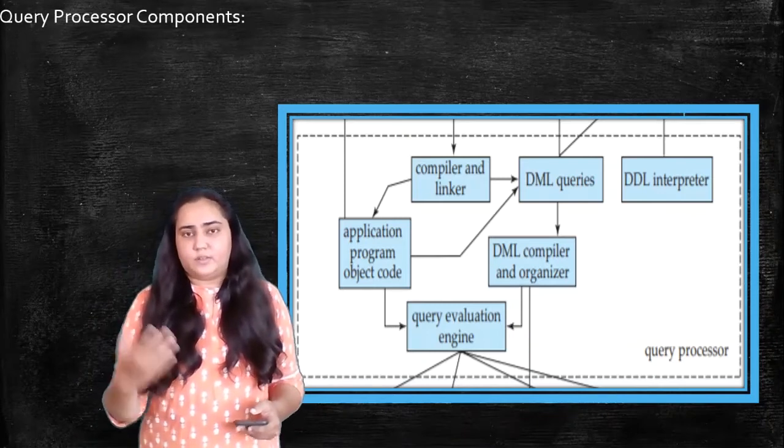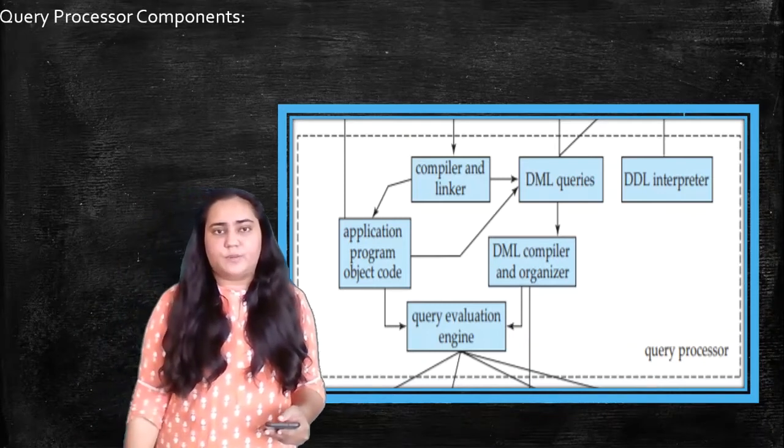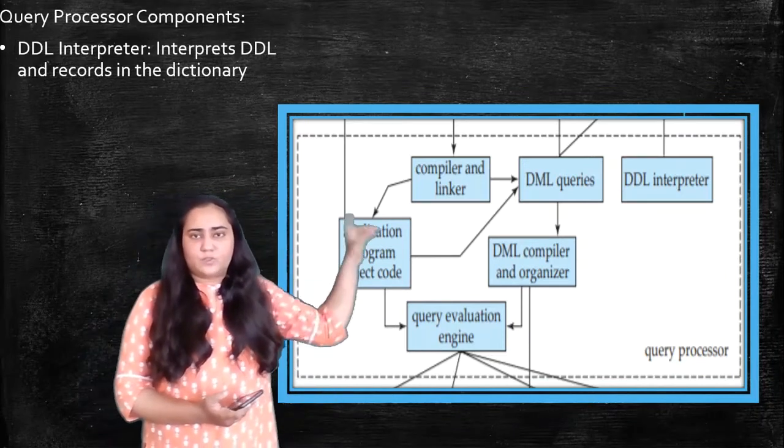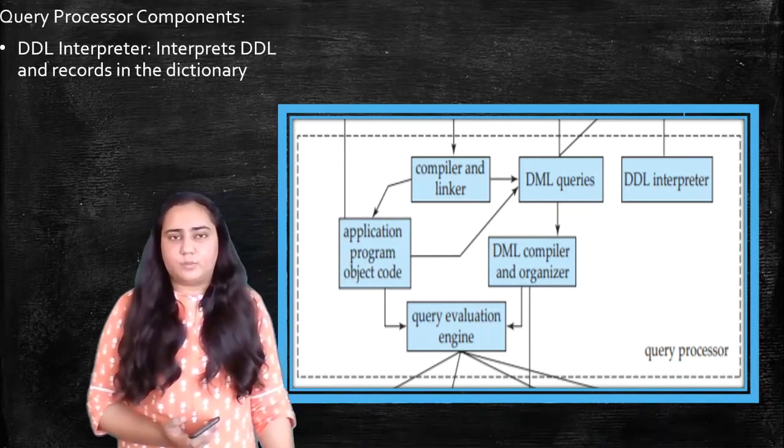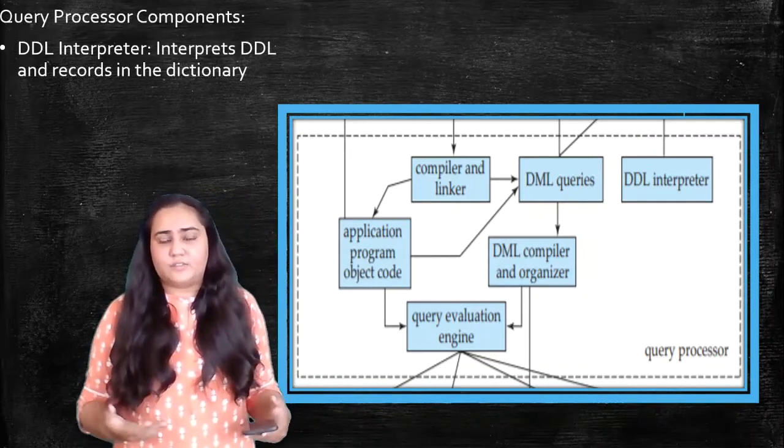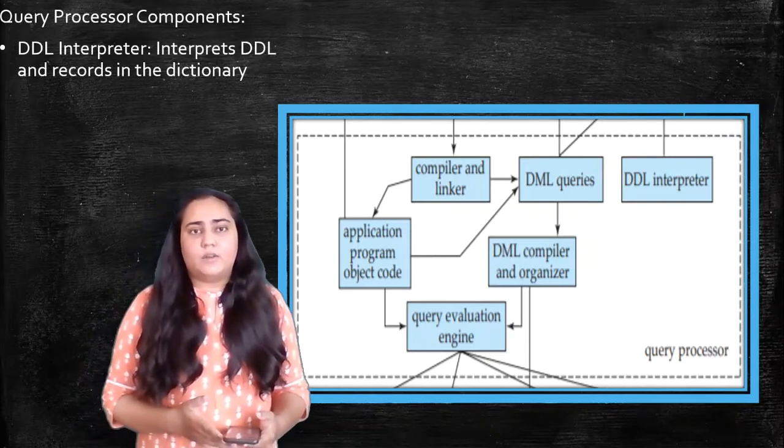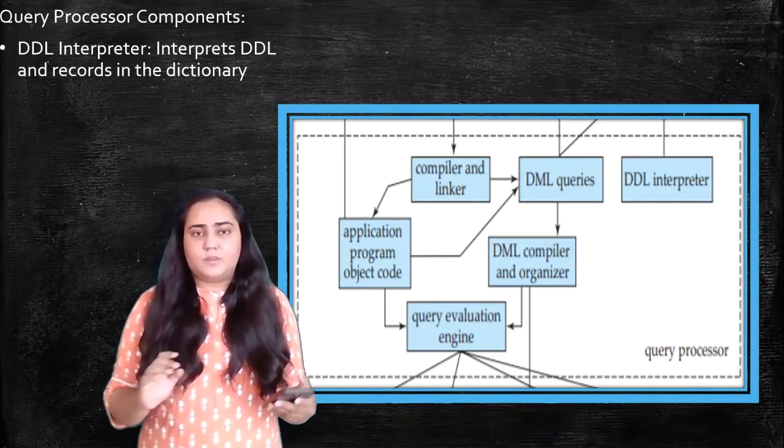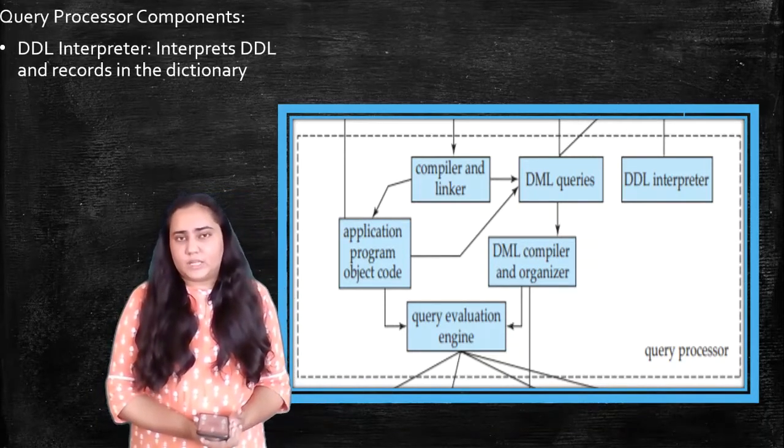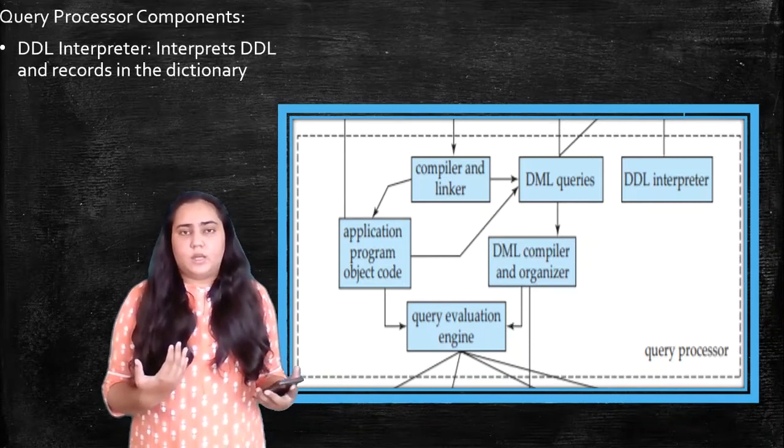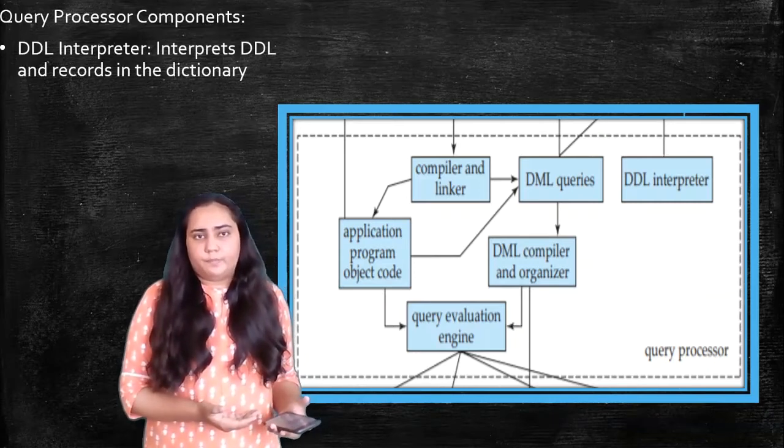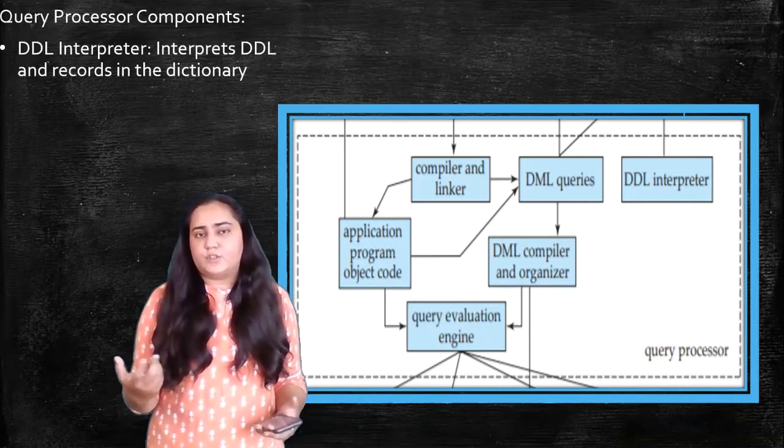Now let's talk about the query processor itself and the components present in it. The first thing is a DDL interpreter which is right at the far end of query processor. This interprets the DDL and records it in the dictionary. So this is the place where you would create your tables and decide what would be their data types, what would be the rules and regulations to enter data into that table. So that is what the DDL interpreter does.